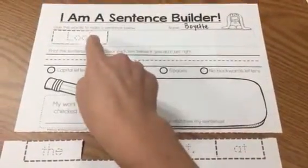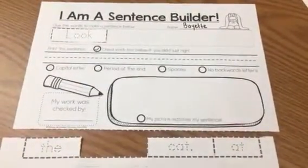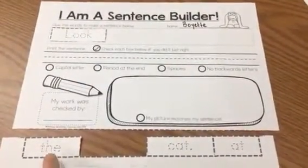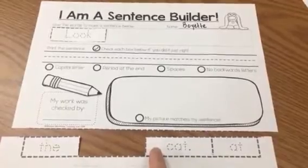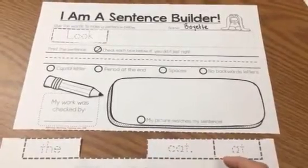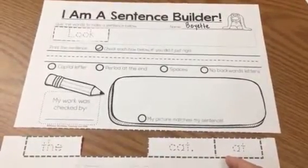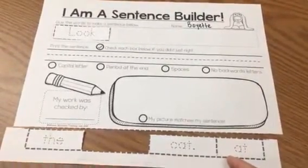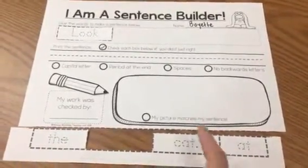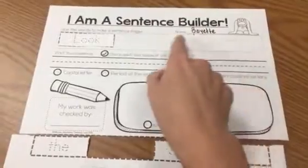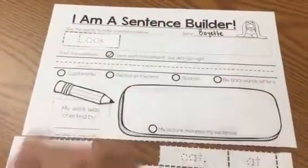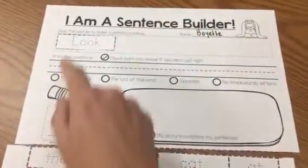So we add the word — look, the, cat, at. Hmm. Unscramble them around to build your sentence.